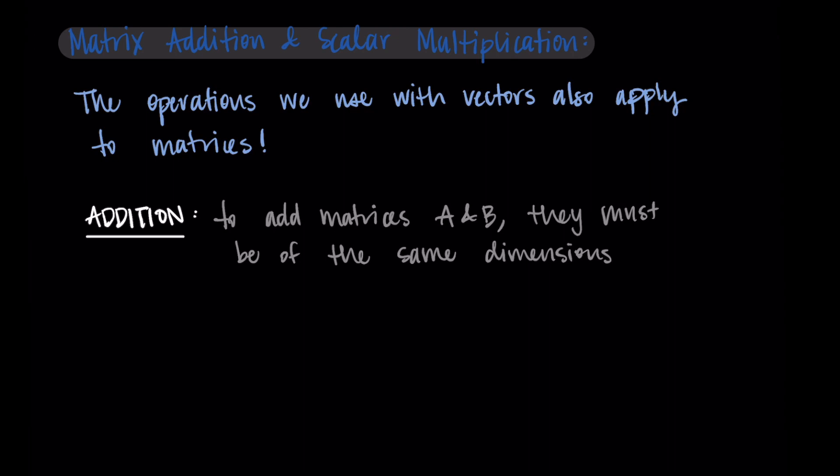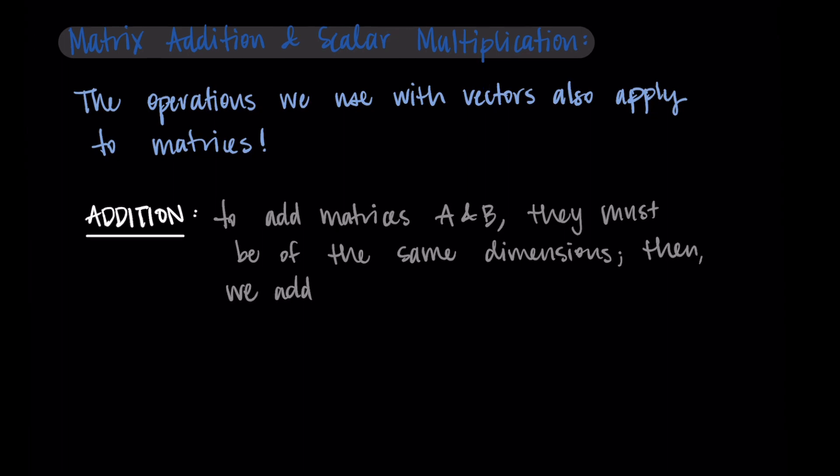To add vectors, you need to have them in the same dimension. They have to have the same number of components. As long as we have that, we can add matrices A and B.